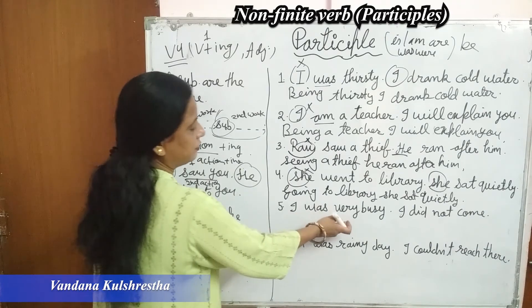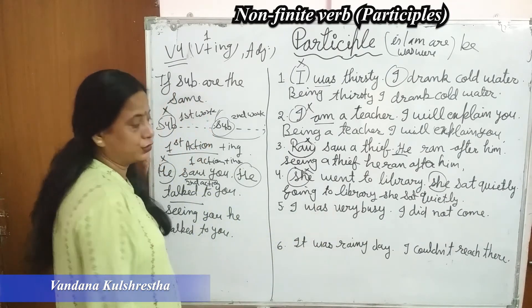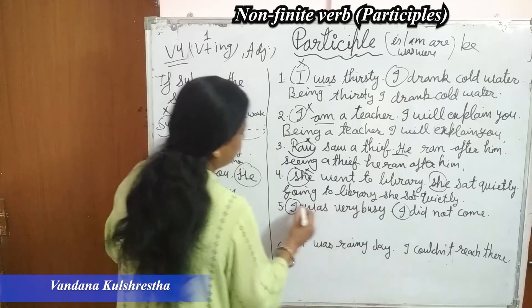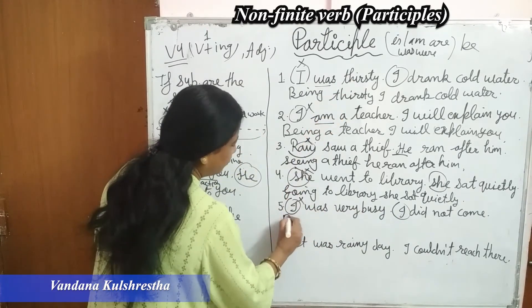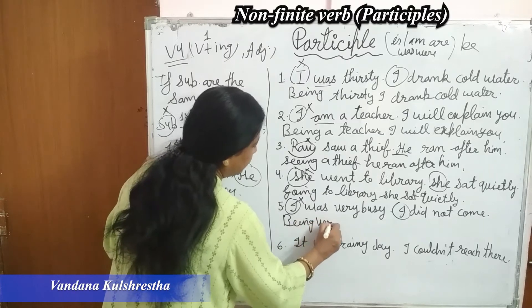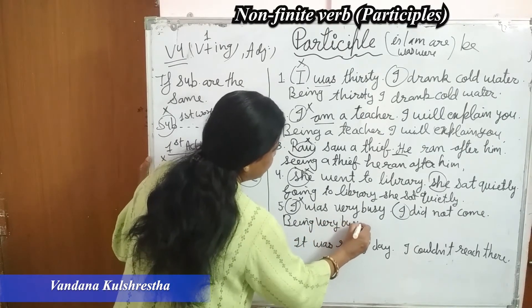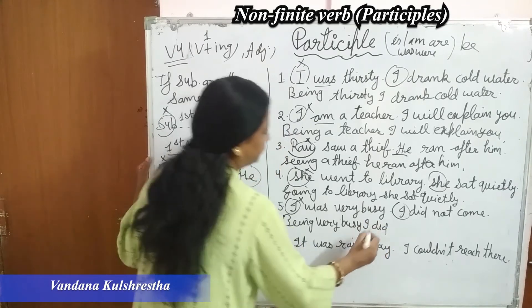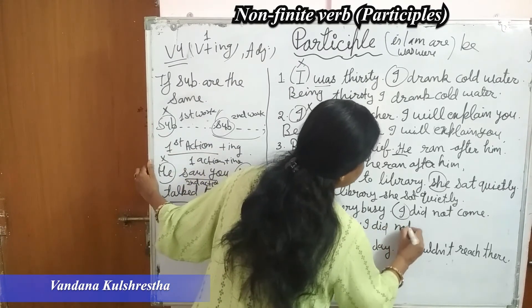Next: 'I was very busy / I did not come.' Again, both subjects are 'I' — we remove the first 'I'. 'Was' is a be-form, so it becomes 'being.' Result: 'Being very busy, I did not come.'